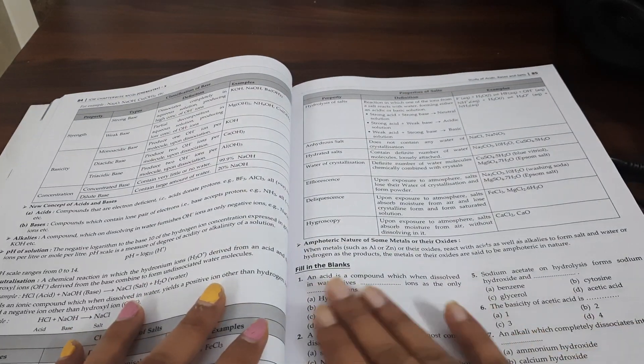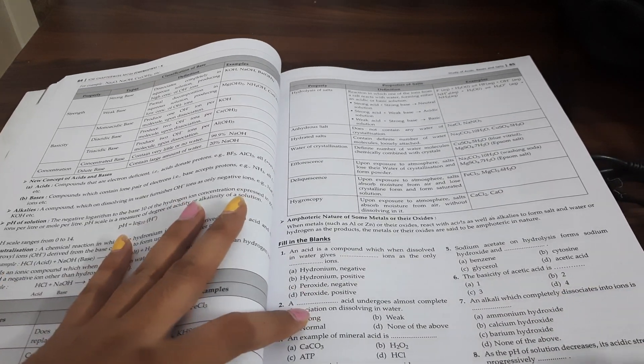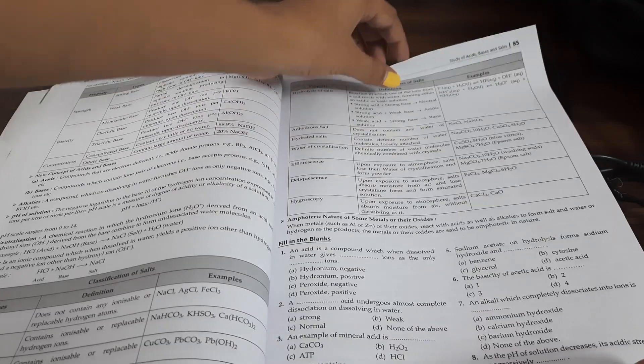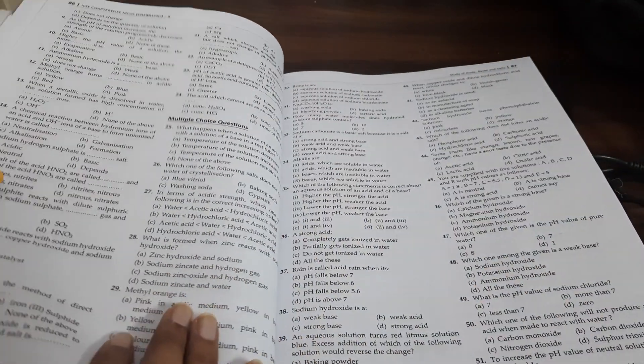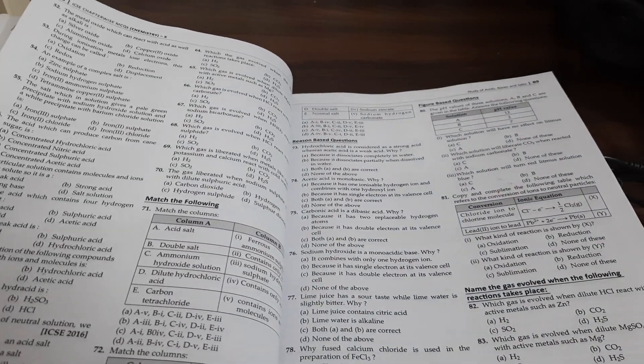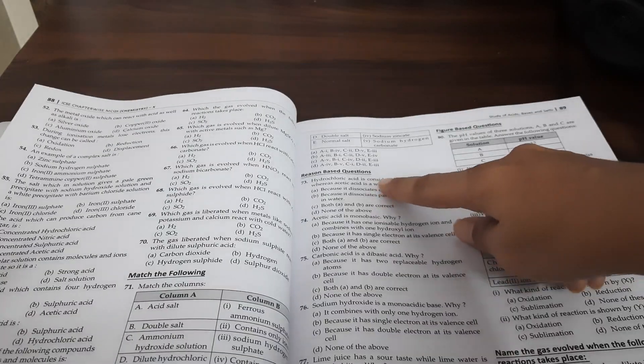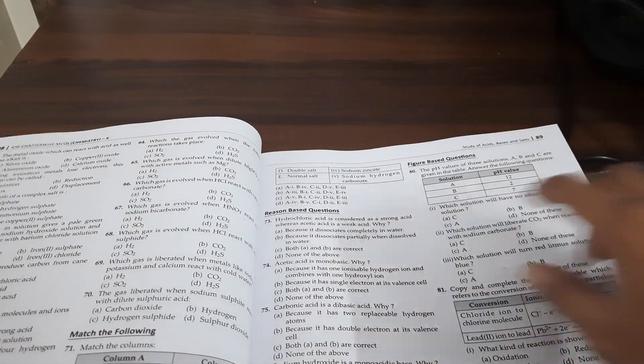Now, they have started with fill in the blanks type of MCQs. Because in Chemistry, they ask you like this. Fill in the blanks is there. Then, these multiple choice questions are there. A lot of questions are there. You can see. Then, match the following types. Match the following types questions there. Then, reason based questions are there. You can see reason based questions.